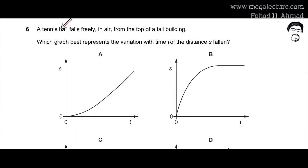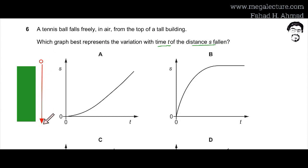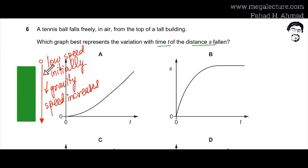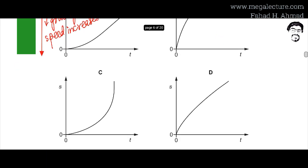MCQ number 6: a tennis ball falls freely in air from the top of a tall building. We need to find which graph best represents the variation of distance fallen s with time t. The ball starts at rest, so initially it has low speed. Due to gravity, it accelerates and gains speed — so more distance is covered as time progresses.